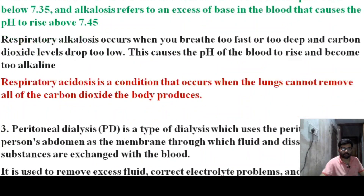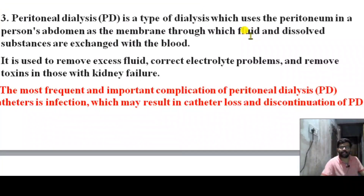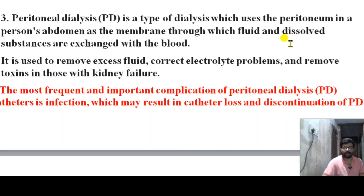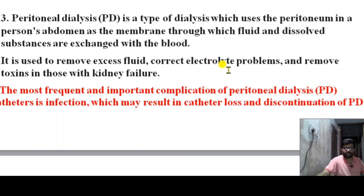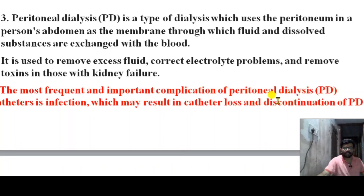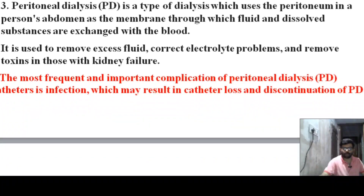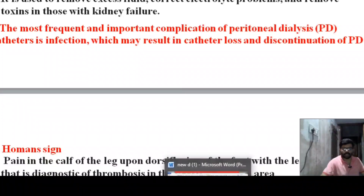Peritoneal dialysis is a type of dialysis which uses the peritoneum in the abdomen as the membrane through which fluid and dissolved substances are exchanged with the blood. It is used to remove excess fluid, correct electrolyte problems, and remove toxins in those with kidney failure. The most frequent and important complication of peritoneal dialysis catheters is infection, which may result in catheter loss and discontinuation of peritoneal dialysis.